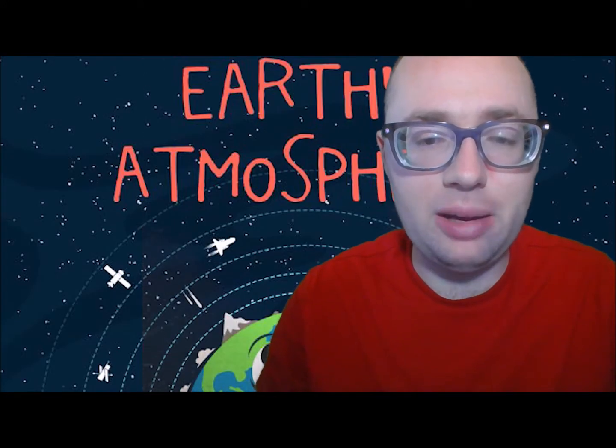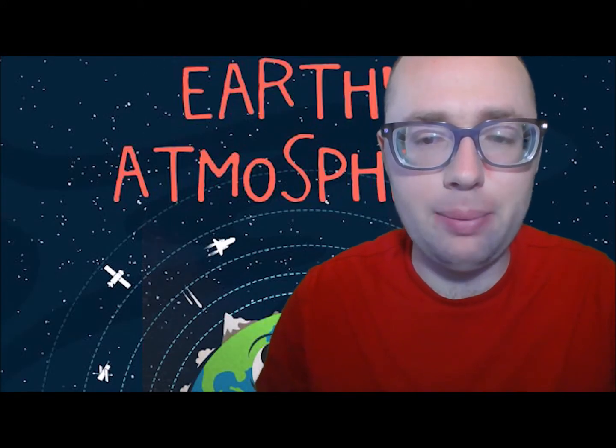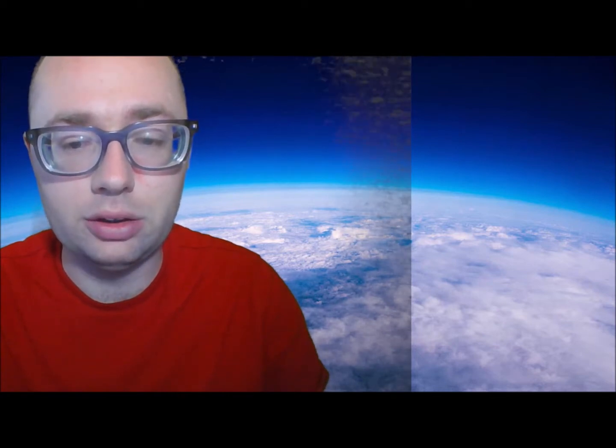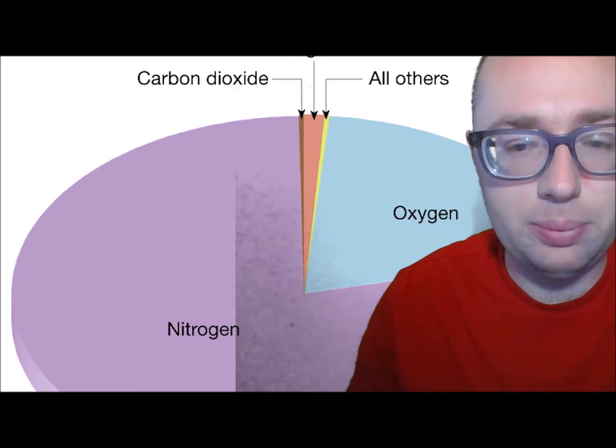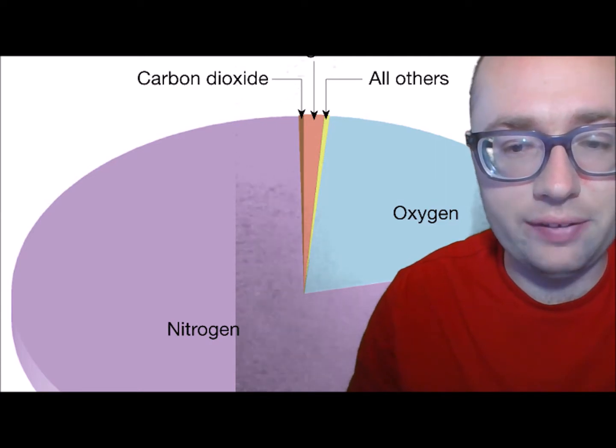Today I'm going to talk about Earth's atmosphere. The atmosphere is the layer of gas that surrounds Earth. It is often called air. Other planets and some of their larger moons also have atmospheres. Earth's atmosphere is held in place by Earth's gravity.